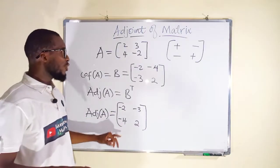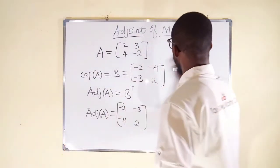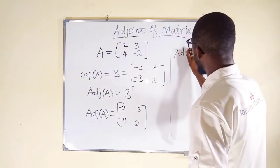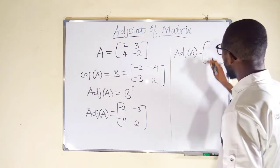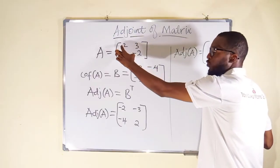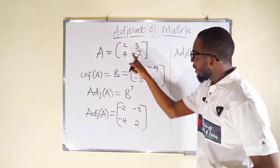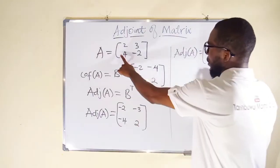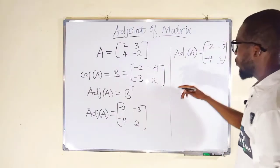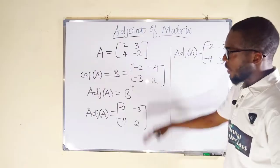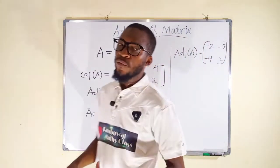There is a shortcut for finding the adjoint of a 2x2 matrix, useful for objective questions. You swap the diagonal elements — so 2 becomes negative 2 and negative 2 becomes 2 — then multiply the other diagonal elements by negative one, giving negative 4 and negative 3. Compare with the traditional result — they are exactly the same. However, this shortcut is not allowed for theory questions; you must follow the traditional method.